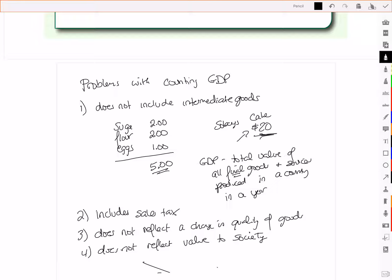It also doesn't tell us about the value to society. So when we look at the amount of spending that we're doing on goods and services, it doesn't really tell you about what we call externalities.